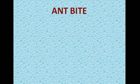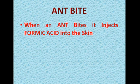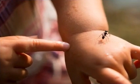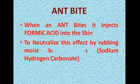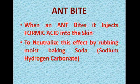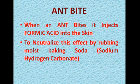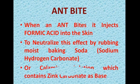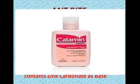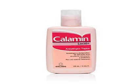The next application is ant bites. Ants contain formic acid, and when an ant bites, it injects this formic acid into our skin. To neutralize this effect, we can rub with moist baking soda — baking soda is a base containing sodium hydrogen carbonate. Or we can use calamine solution, which contains zinc carbonate as a base. Calamine solution is a rose-colored solution.